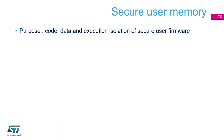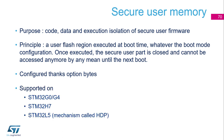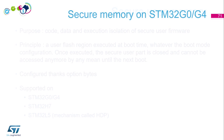The secure user memory provides code data and execution isolation. The secure user firmware principle: it is executed at boot time, whatever the boot mode configuration. Once executed, the secure user part is closed and cannot be accessed anymore by any means until the next boot. It is configured via option bytes, so it is a static protection. It is supported on the G0, G4, H7, and L5 families. On the L5, this mechanism is also called HDP.